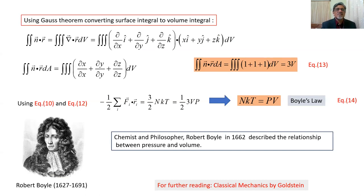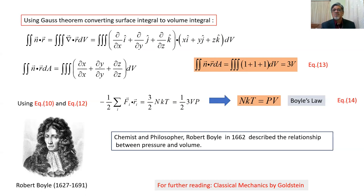Expanding the del operator as (∂/∂x î + ∂/∂y ĵ + ∂/∂z k̂) dotted with (x î + y ĵ + z k̂), the right-hand side simplifies to ∂x/∂x + ∂y/∂y + ∂z/∂z integrated over the volume, each partial derivative equaling 1. So the result is the integral of 3 dV, which equals 3V.